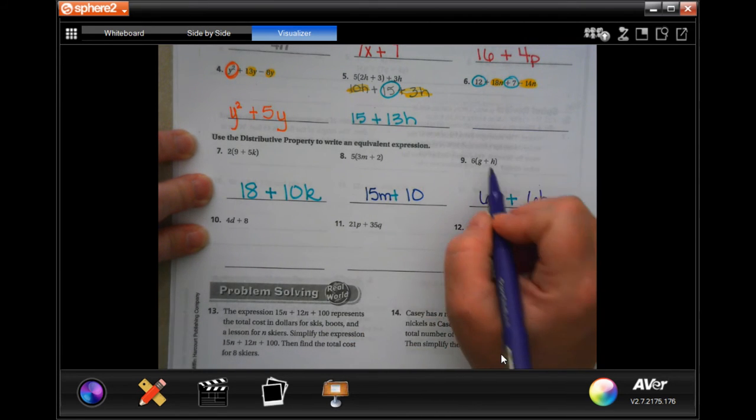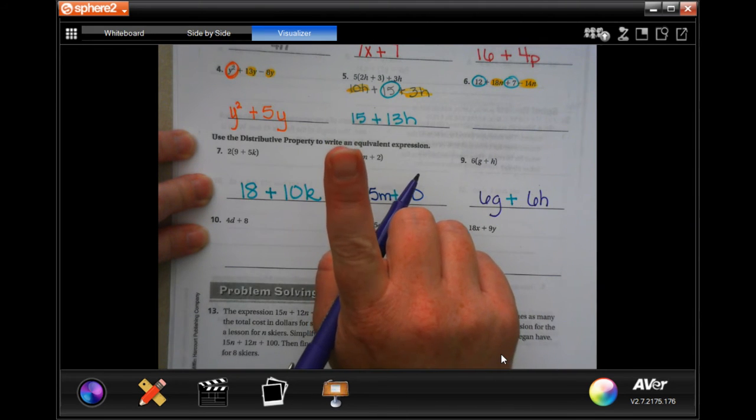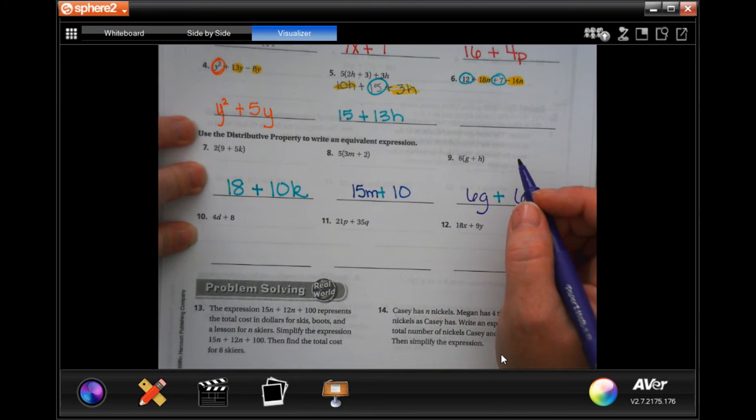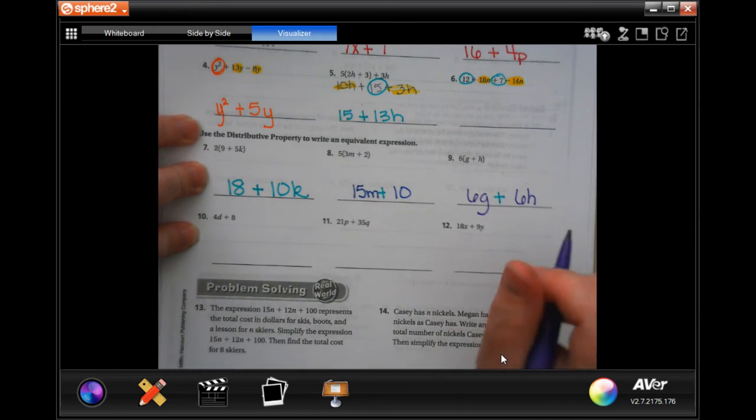6 times g is 6g, and 6 times h is 6h. Remember, when there is not a number in front of a letter, it means there's one of them. We don't say, can I have one apple? We say, can I have an apple, right? So that's just apple.